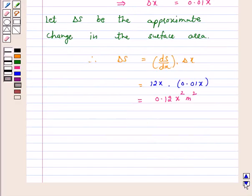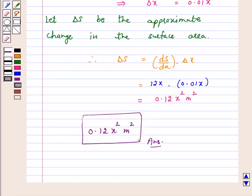Hence, the approximate change in the surface area is 0.12x square meter square. And this is an answer for the above question. I hope the question is clear to you. Bye and take care.